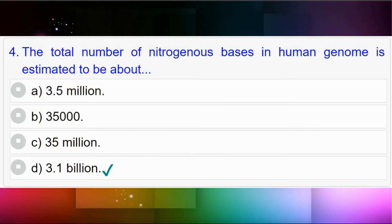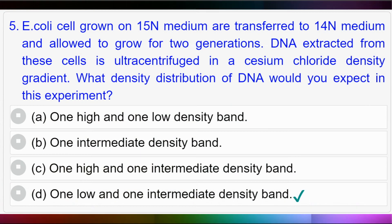Question number four: The total number of nitrogenous bases in the human genome is estimated to be about — option A: 3.5 million; option B: 35,000; option C: 35 million; option D: 3.1 billion. Answer to question number four is option D: 3.1 billion.